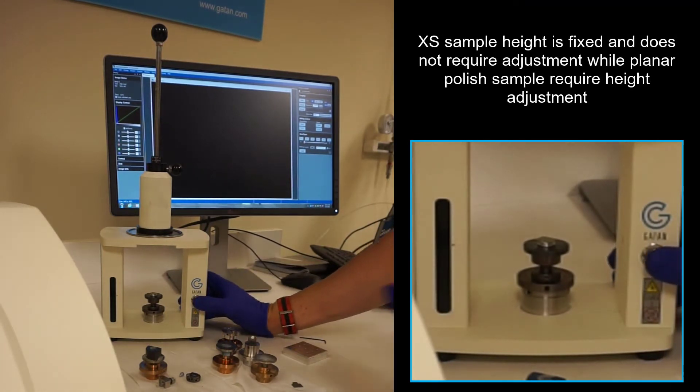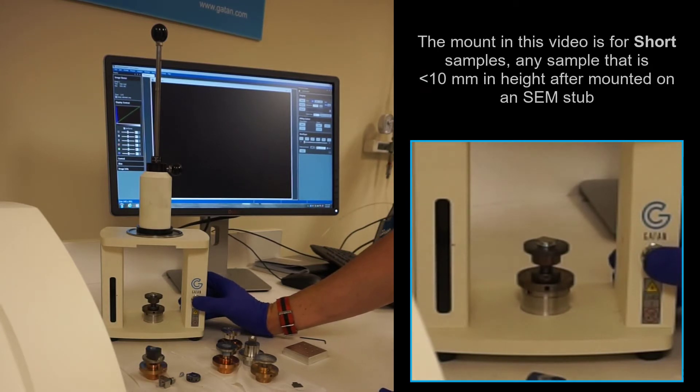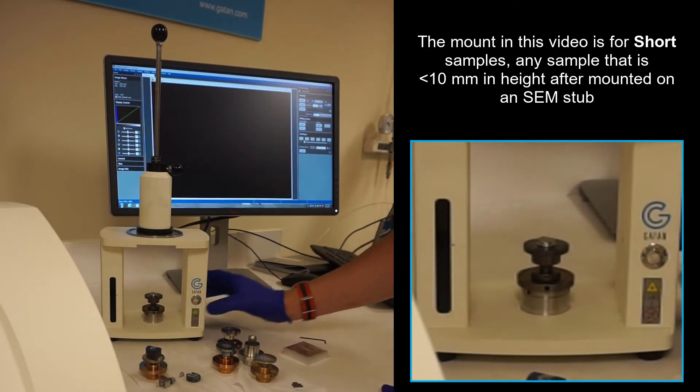To set the correct height, when doing a cross-section, the height is always correct. But when doing a planar polish, the sample height will vary.